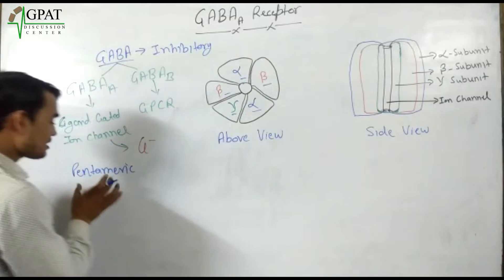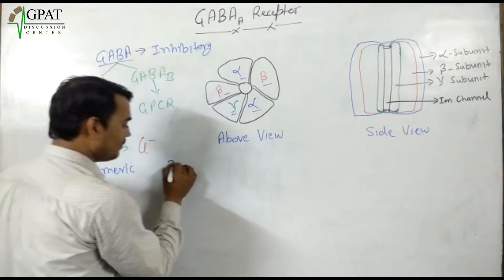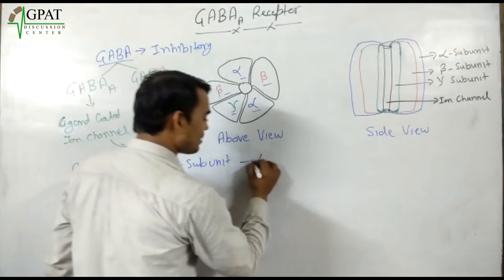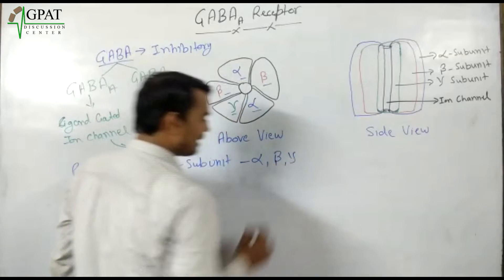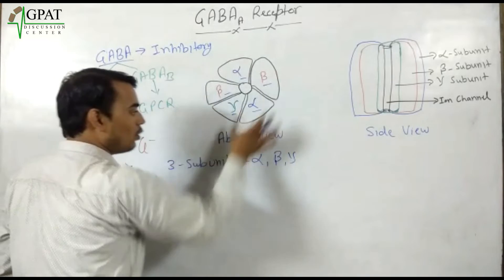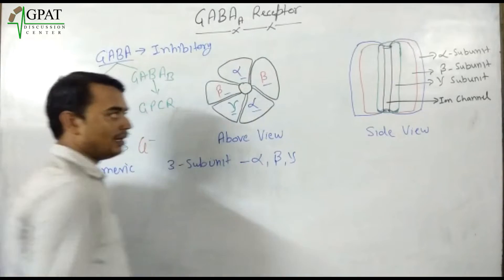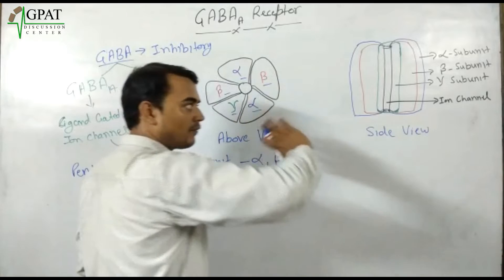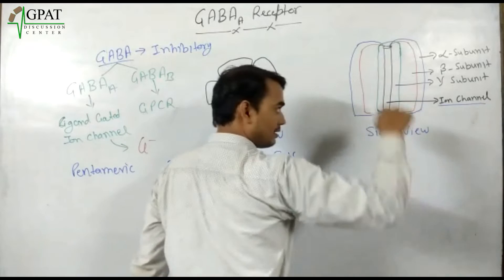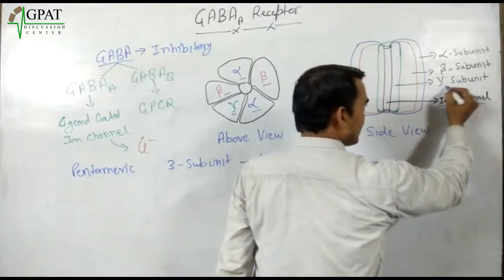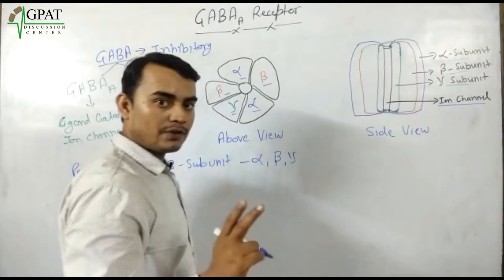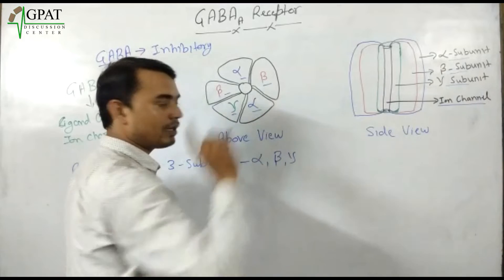It has five subunits but only three distinct subunit types: alpha, beta, and gamma. That means only three subunit types make up the pentameric structure. Looking at the side view of the GABA-A receptor, we can see the ion channel through which chloride passes — there is one gamma subunit, two beta subunits, and two alpha subunits.